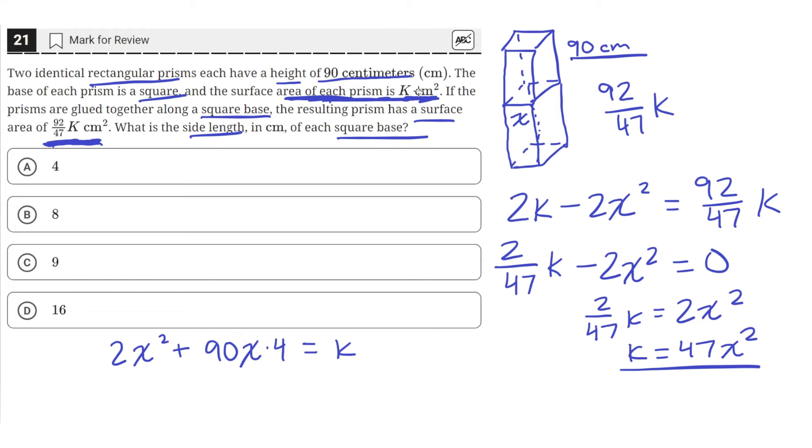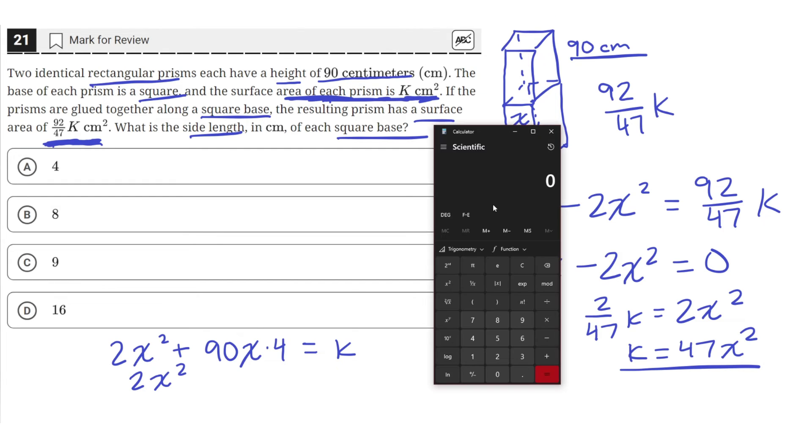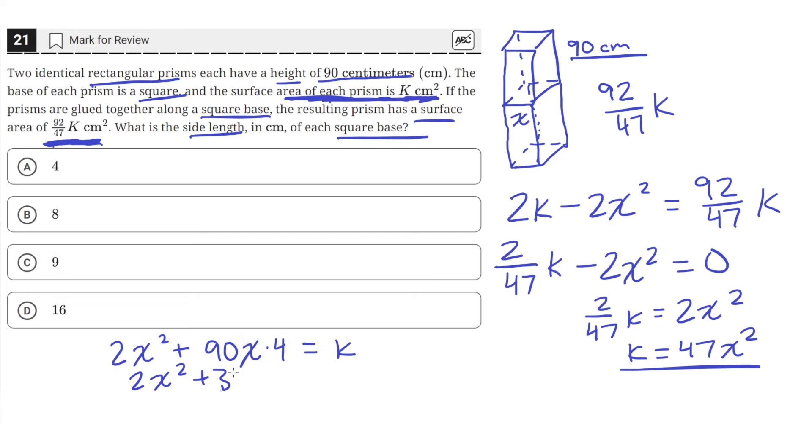Now we can just solve, use this equation to solve for another value or another equation for k. So 2x², and we'll just multiply 4 with 90. 4 times 90 is equal to 360. So 360x equals k.